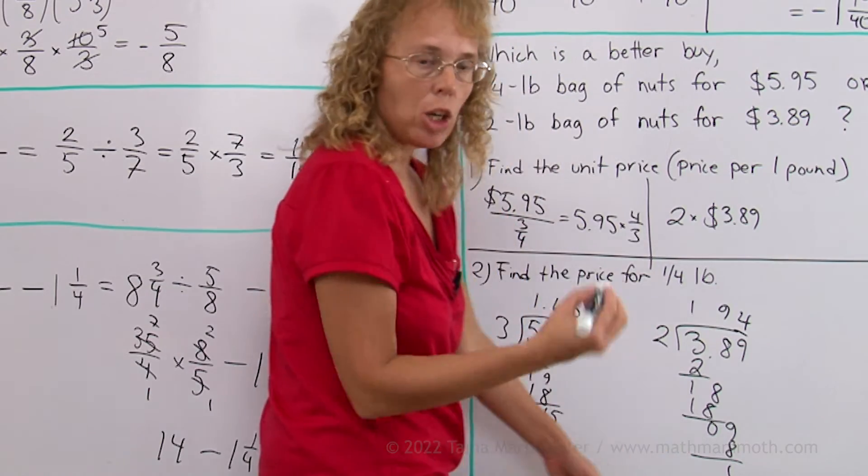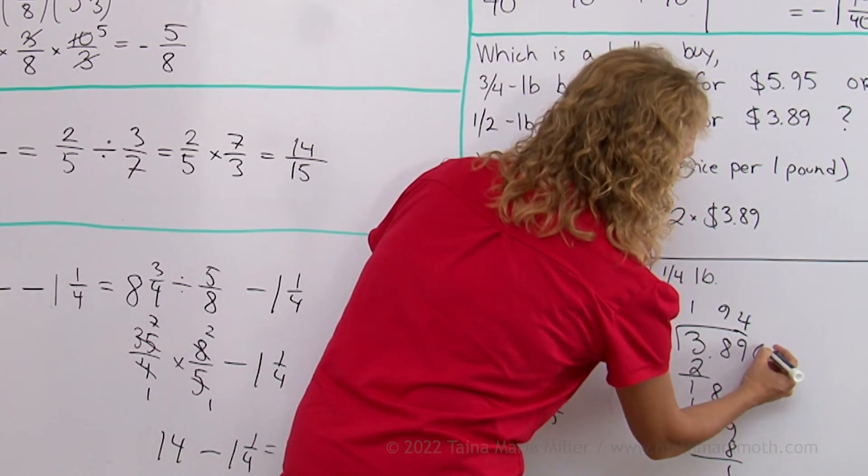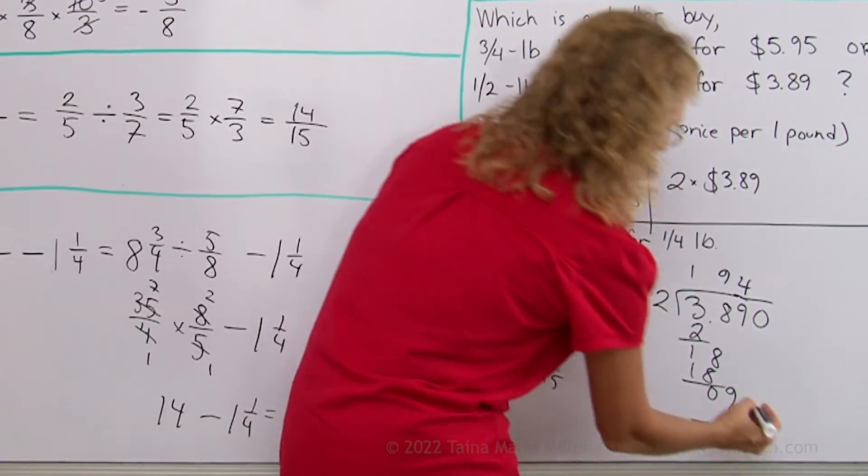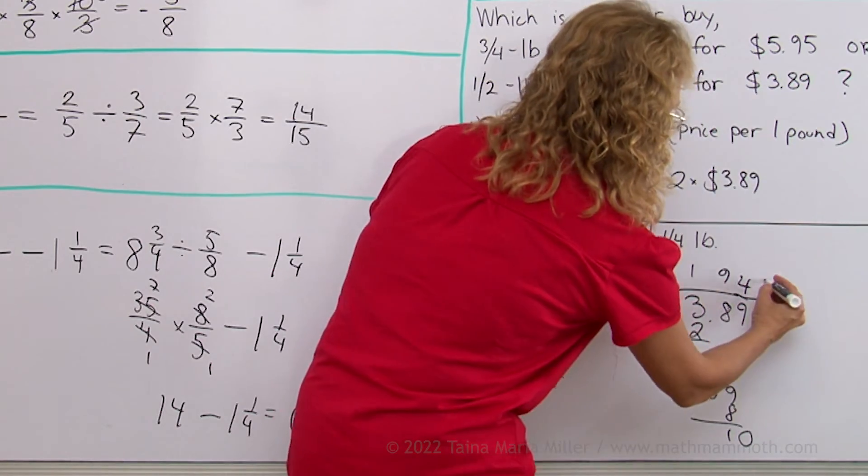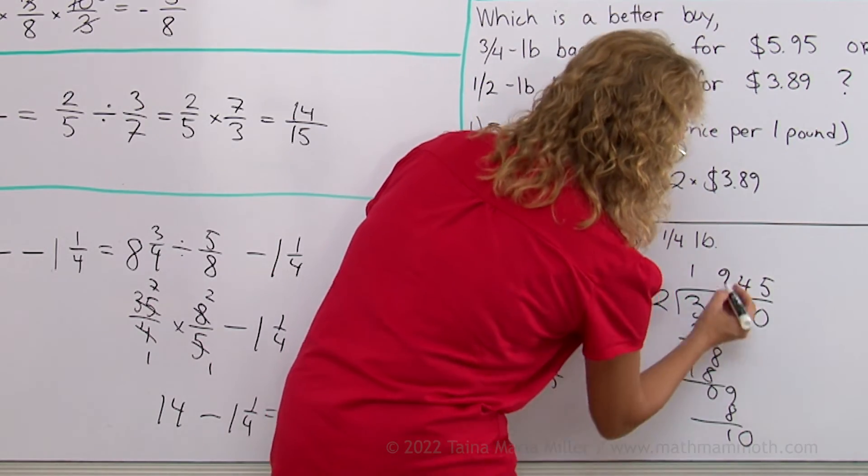There's a remainder of 1. But I'll continue it just for one more digit. I add one more decimal 0 here and get 10 here then. And 5 here. So then it's even.